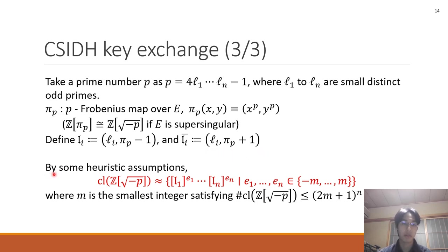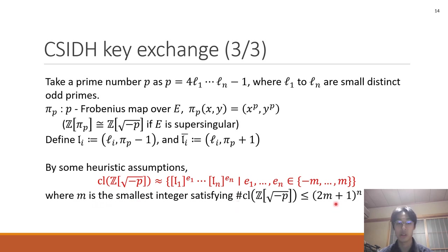Then, by some heuristic assumptions, the ideal class group of Z[√(-p)] is approximated to this set, where M is the smallest integer satisfying this inequality. By Vélu's formulas, the group actions of l_1 to l_n can be easily computed. So the group actions of ideal classes in this set can be easily computed.